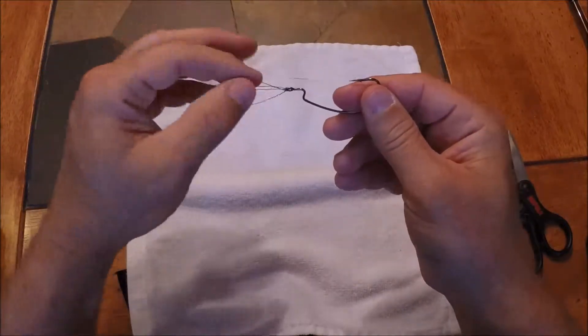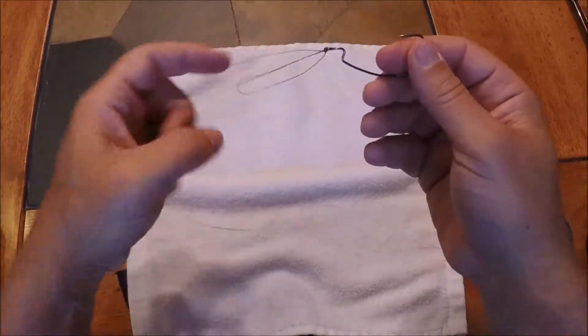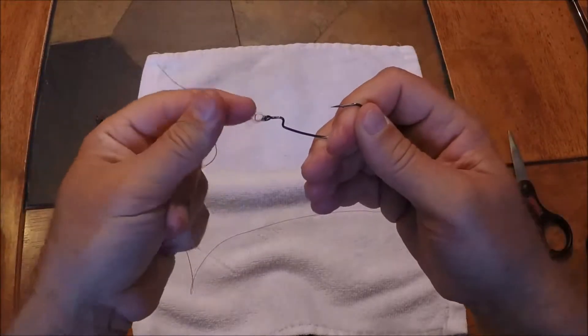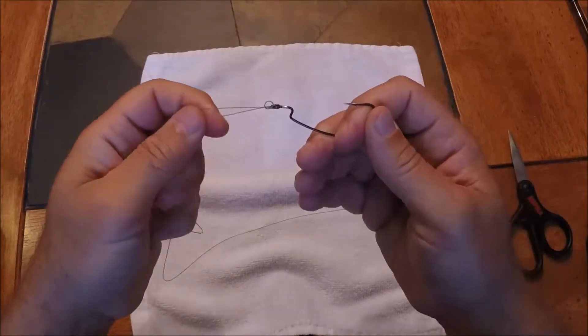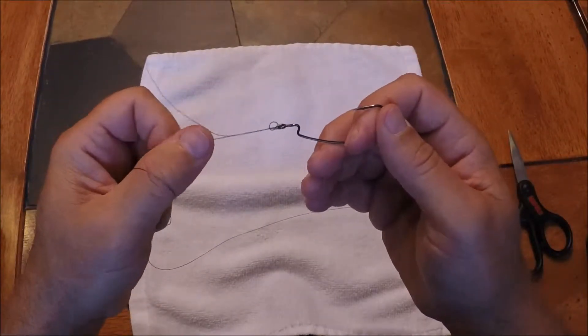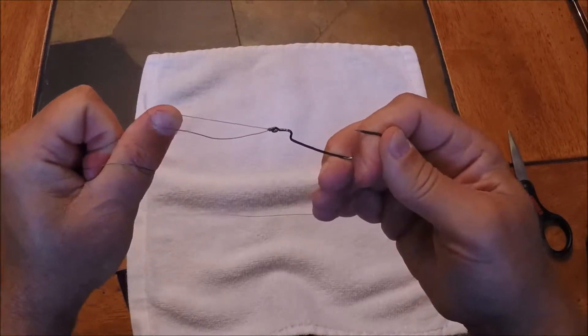Now the knot is essentially done. What I need to do is tighten everything down. This is a braid so you really don't need to wet it. If it were a monofilament or fluorocarbon I would wet the line, and I'm going to pull it nice and snug.